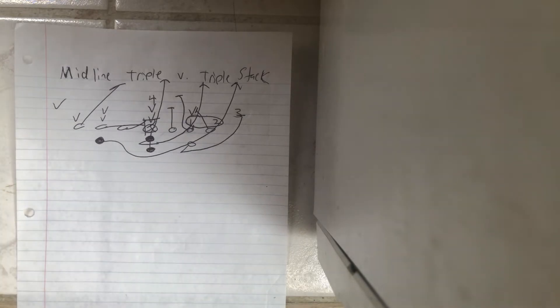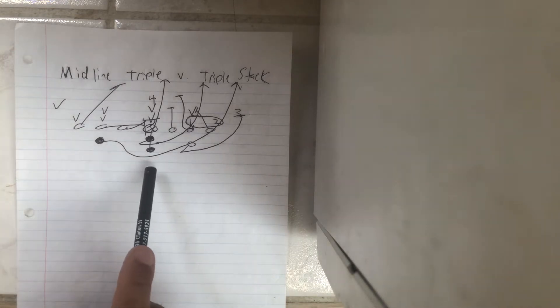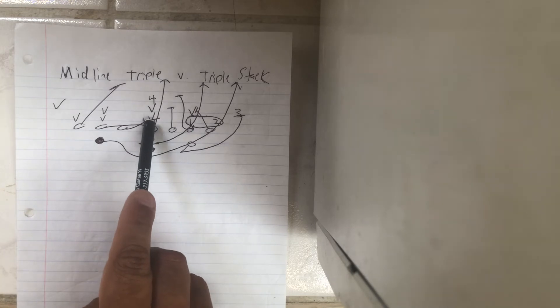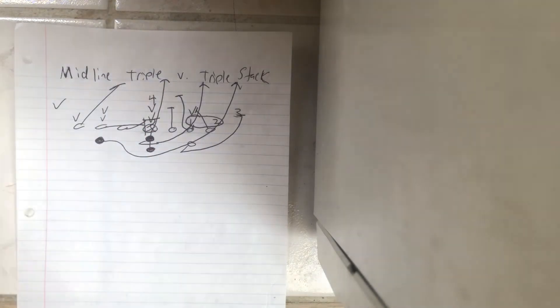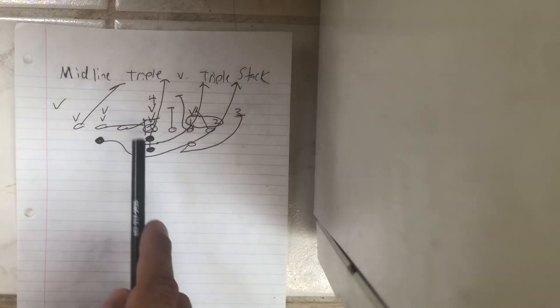The quarterback is going to take the snap, jump in the backside A gap, and point the ball. It's the B back's ball, and the B back is going to run right through the midline. If the zero is on the midline, he'll bend slightly to the play side off that block unless number one cancels the B.